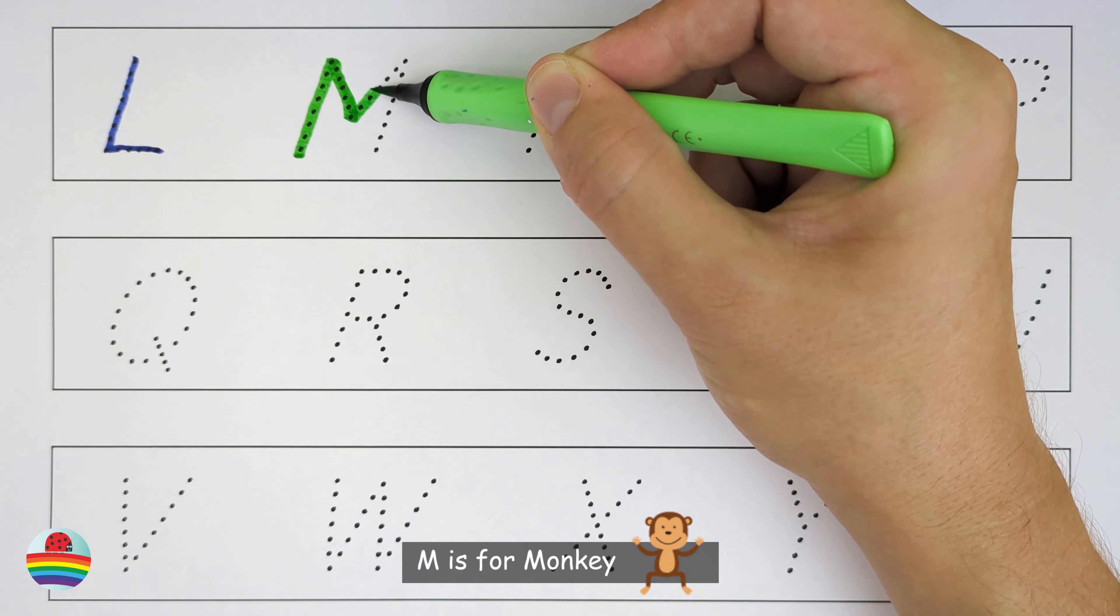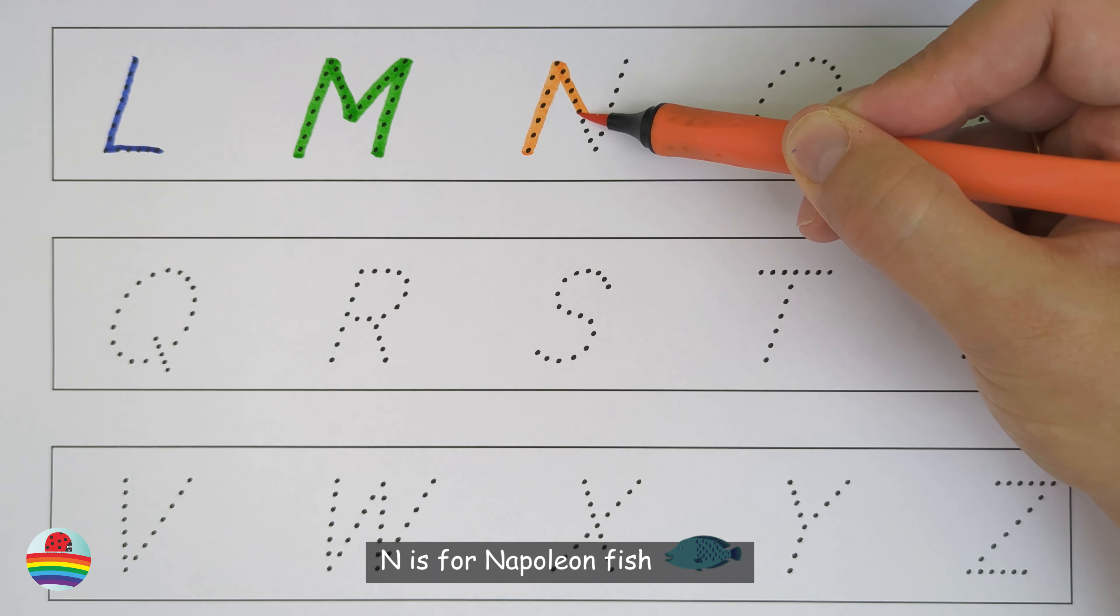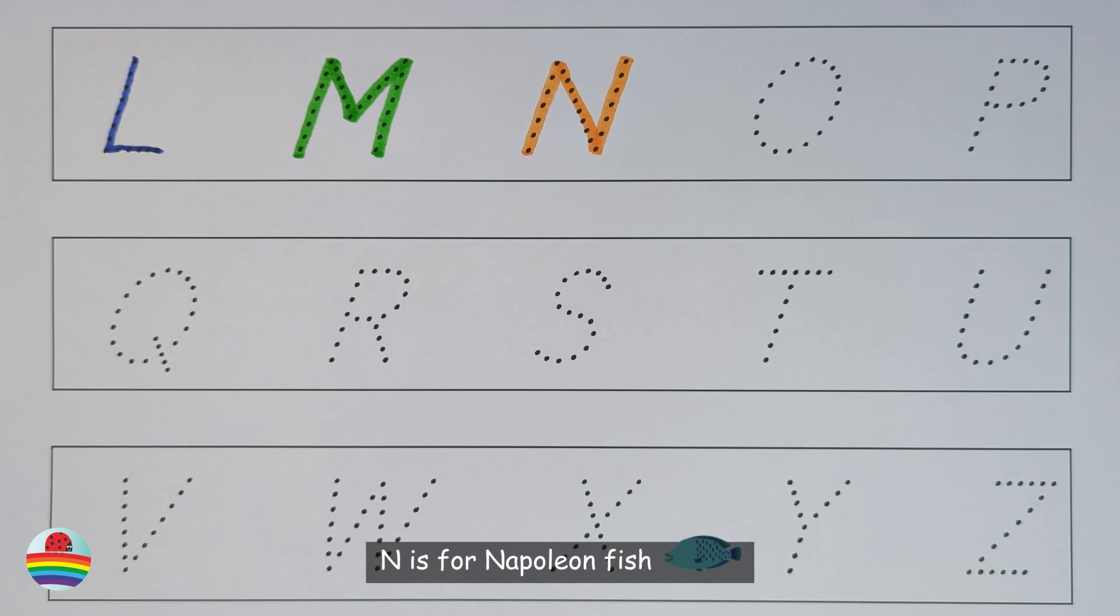M. M is for Monkey. M. N. N is for Napoleon Fish. N. O.